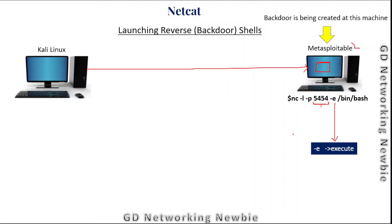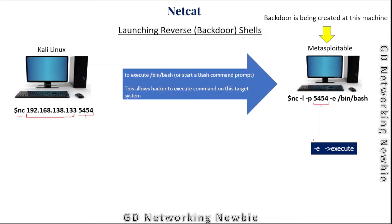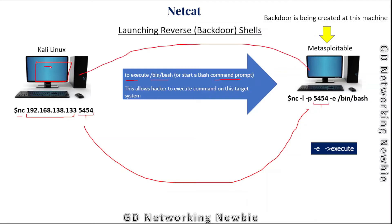On the attacking machine, we again use Netcat and provide the IP address of the victim's machine and the port number on which the victim machine is listening. The execute option runs /bin/bash, starting a bash command prompt, which allows the hacker to execute commands on the target machine. We'll be sitting on the attacker machine but will have full control of the victim machine and can issue commands to control the operation of Metasploitable.